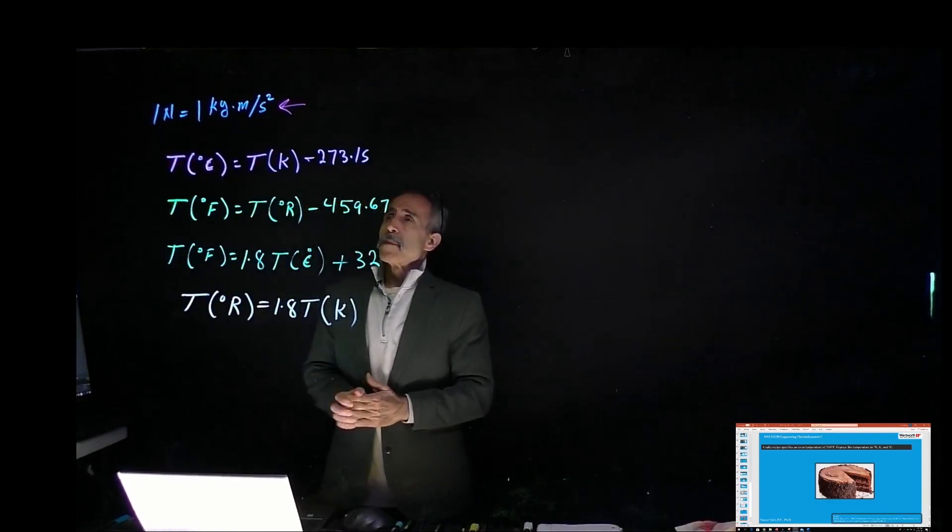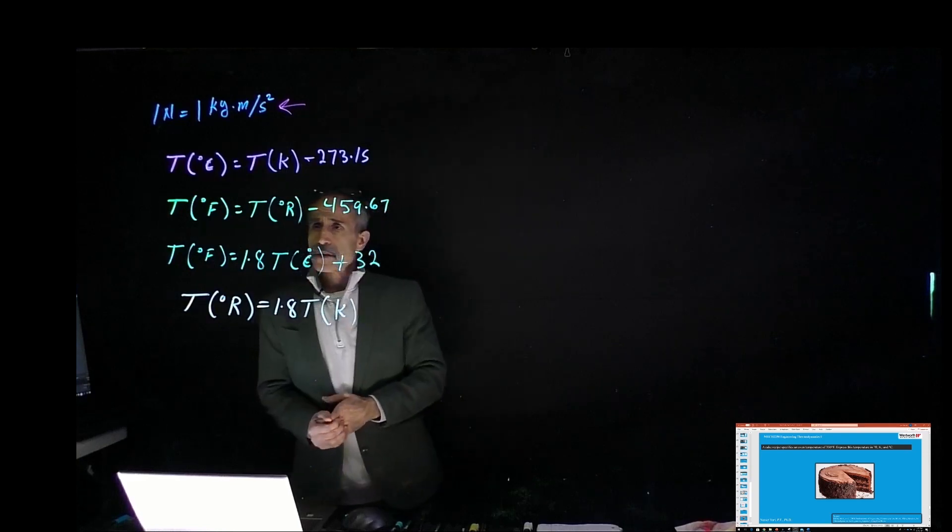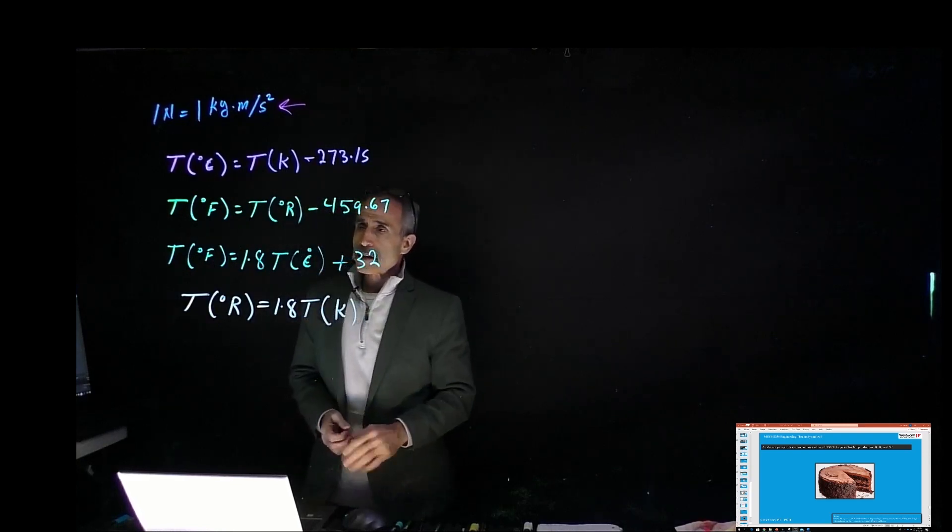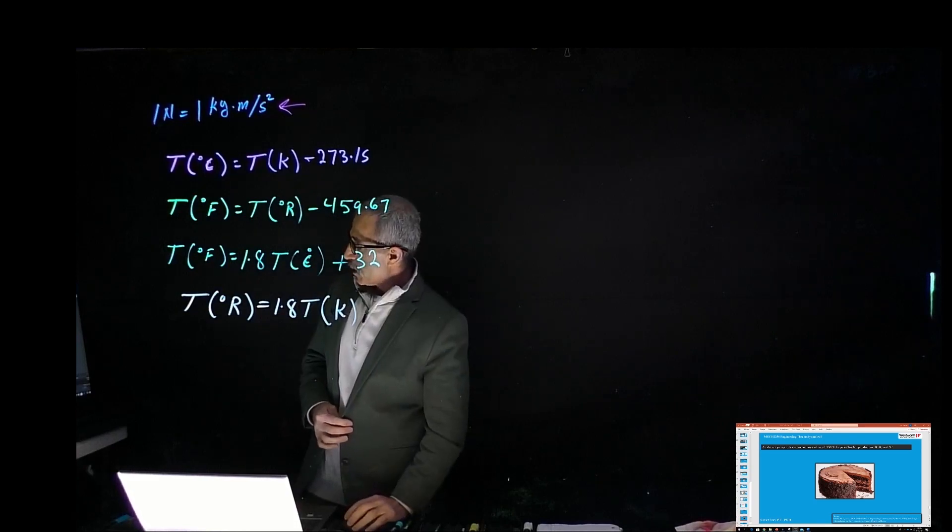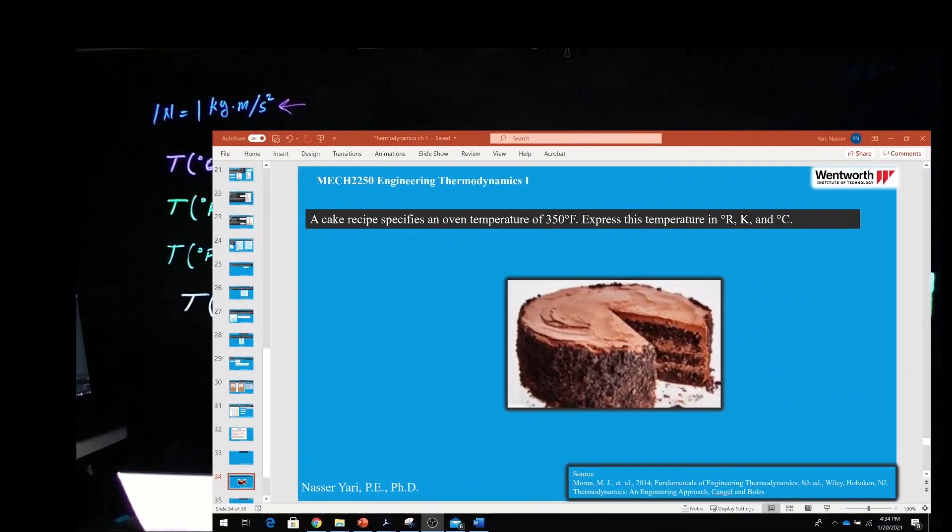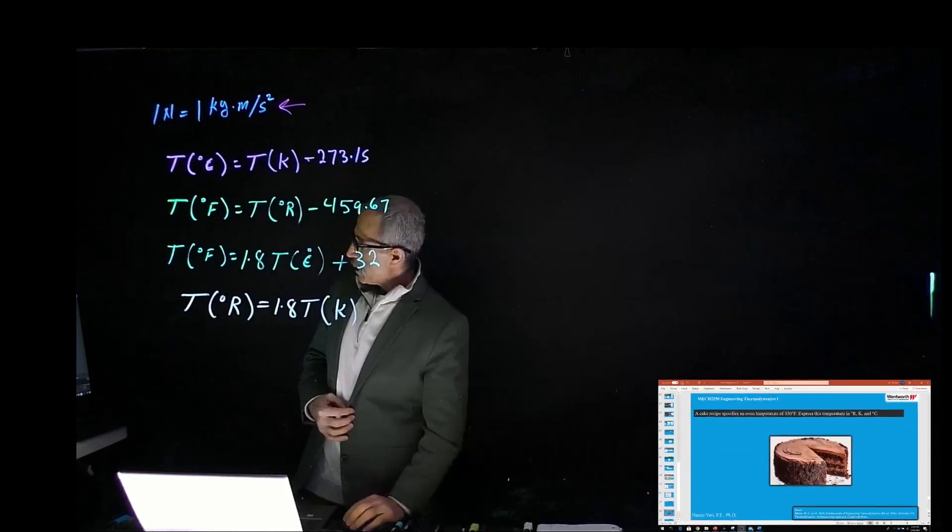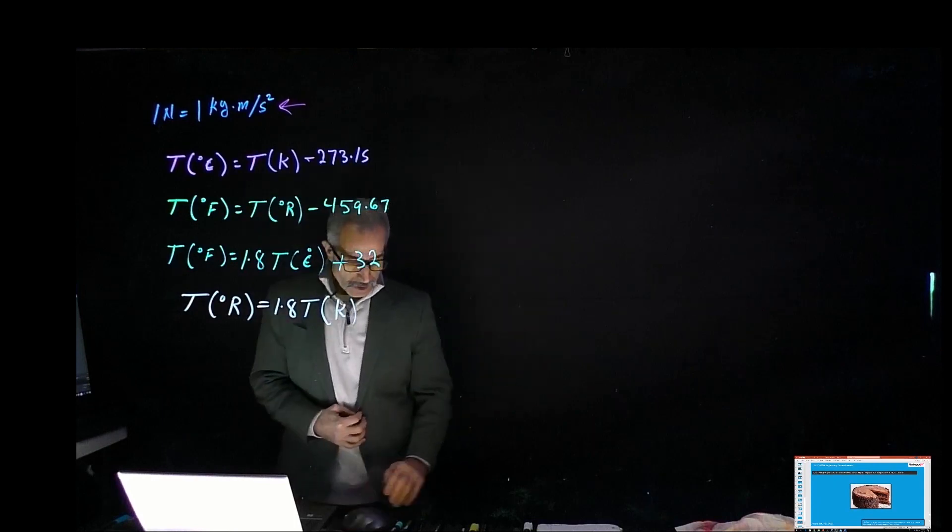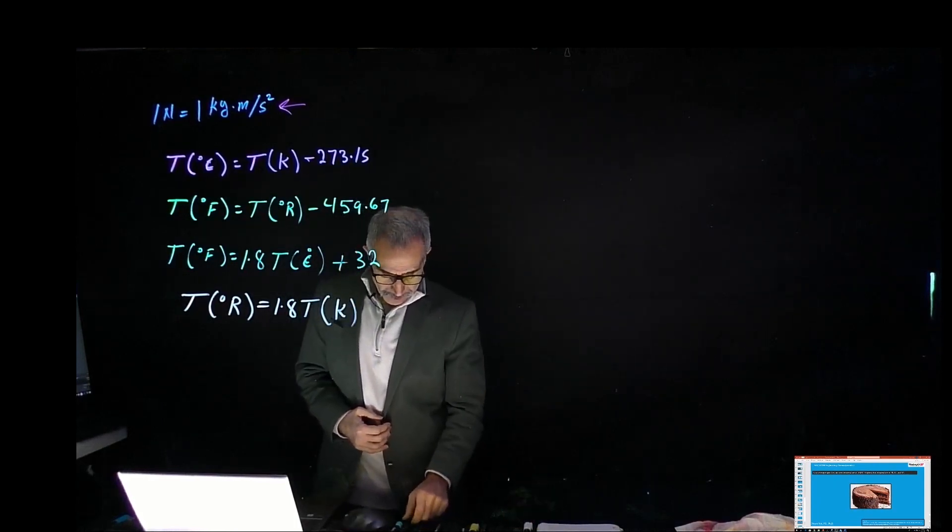Our next problem is going to be about temperature conversion. We have this cake in the oven at a temperature of 350 degrees. It used to be a whole cake and when it came out somebody took a chunk out of it, it wasn't me. Express this temperature in Rankine, Kelvin, and Celsius. We have the formula in front of us, let's go to work and see what we can do.